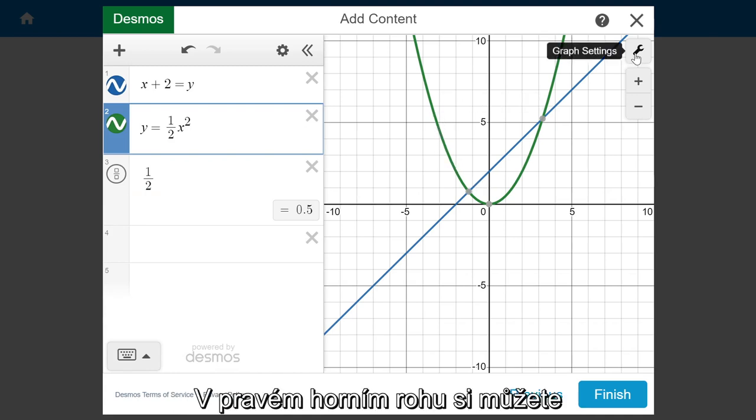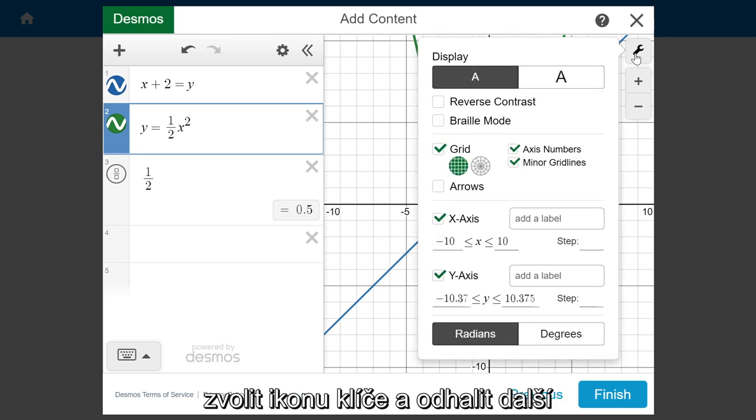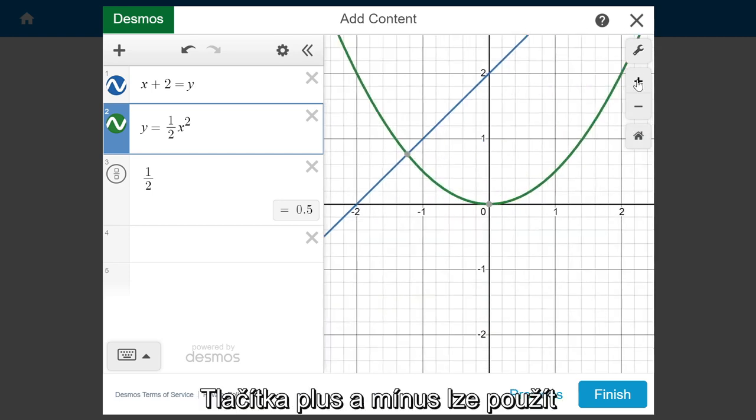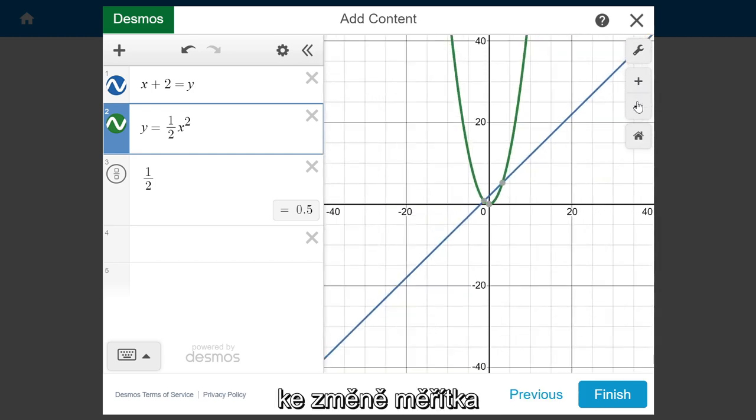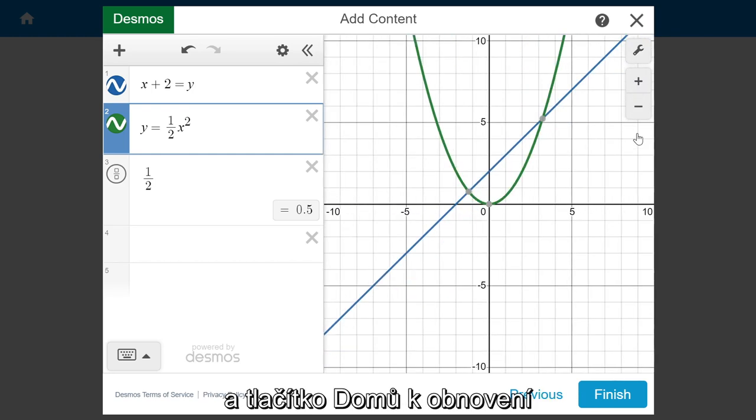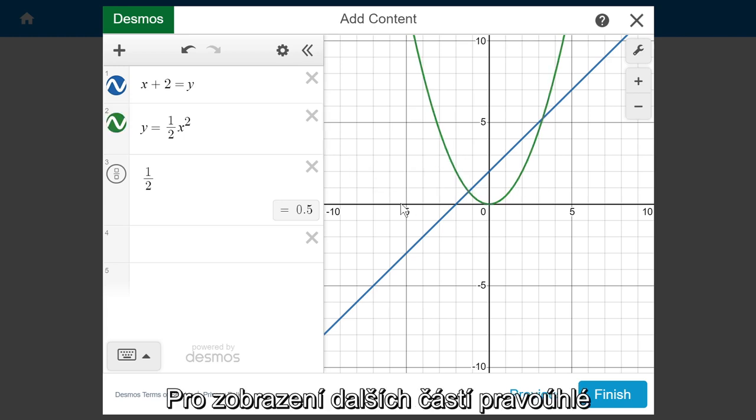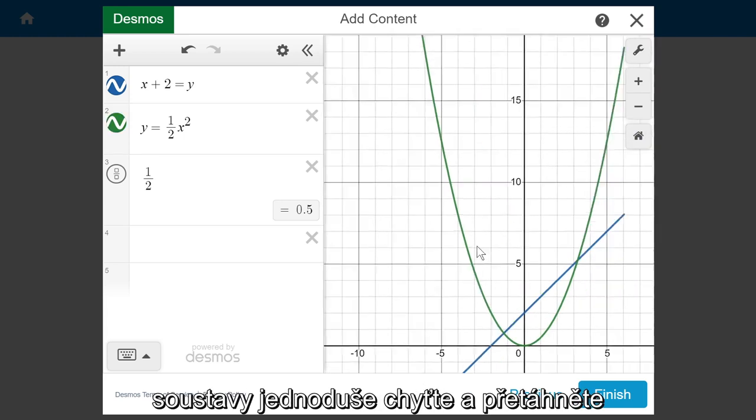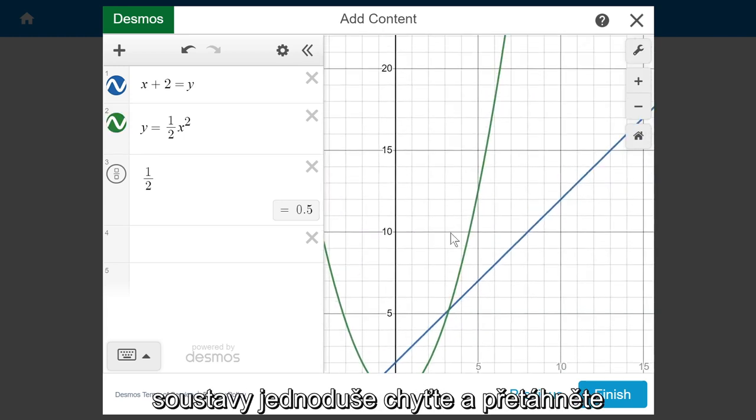On the top right hand corner, you can select the wrench to reveal more preferences. The plus and minus buttons can be used to zoom in and out of the graphic plane, and the home button to restore the default view. To view different parts of the graph paper, simply click, hold, and drag on the page.